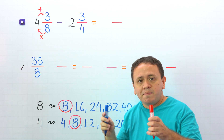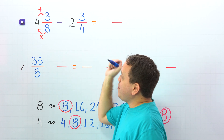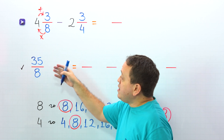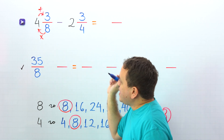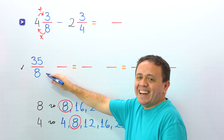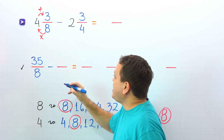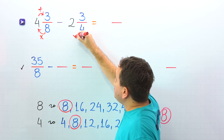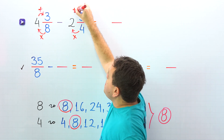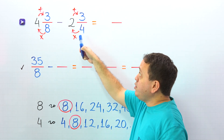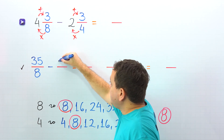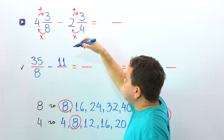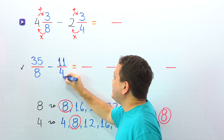An improper fraction is a fraction where the numerator, the top number, is greater than or equal to the denominator, the bottom number. 35 eighths is an improper fraction given that the numerator 35 is greater than the denominator 8. We continue with the minus sign and do the same with 2 and 3 fourths. We multiply the denominator by the whole number and add to the numerator: 4 times 2 is 8, plus 3 gives us 11. So 2 and 3 fourths becomes 11 fourths, and the denominator stays the same.